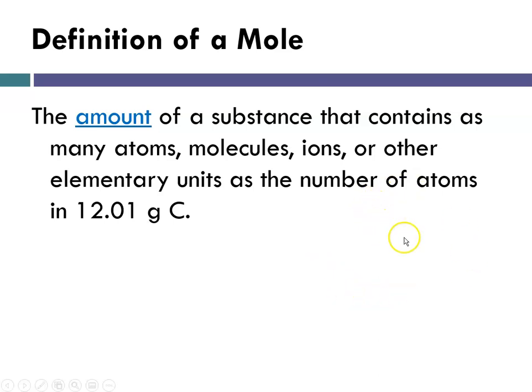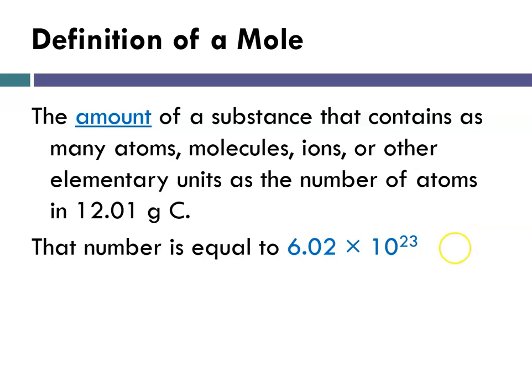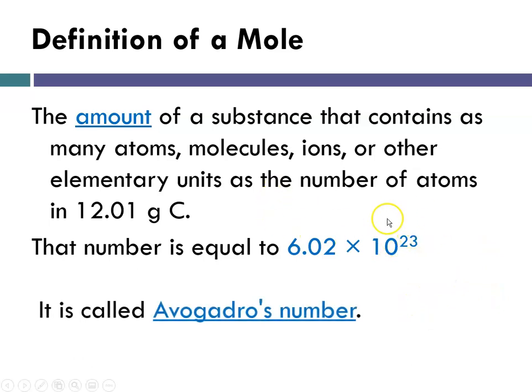So let me say that again. The definition of a mole is the amount of a substance that will contain as many pieces, atoms, or molecules, as there are in 12.01 grams of carbon. And it turns out that if you have a sample of 12.01 grams of carbon, it contains exactly 6.02 times 10 to the 23rd atoms. And that number, 6.02 times 10 to the 23rd, is called Avogadro's number.